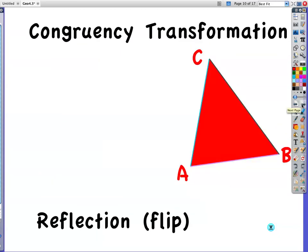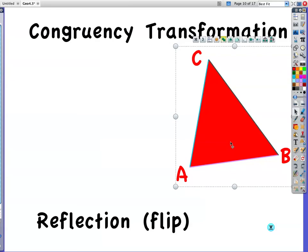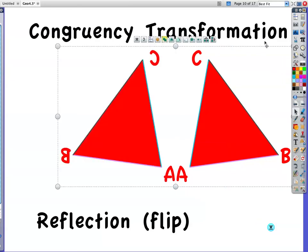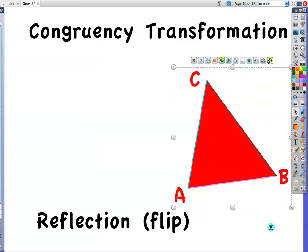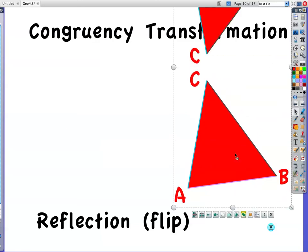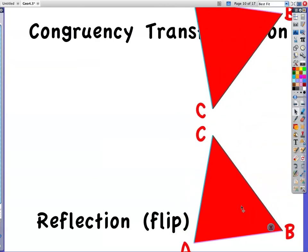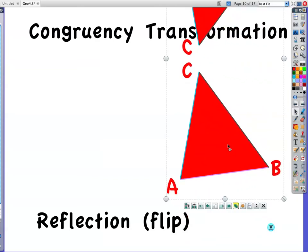Reflection. This is your third congruency transformation. You can reflect or flip something. There's lots of different ways to flip something. This would end up being C prime, this would be B prime, and this would be your A prime. It's reflected. You can reflect it another way as well. So reflections are another type of congruency transformation. Those are your three.